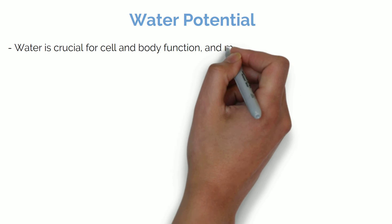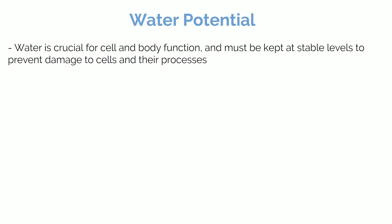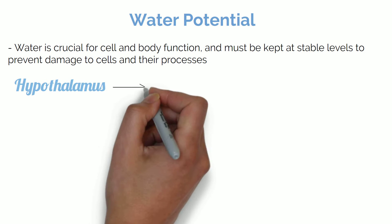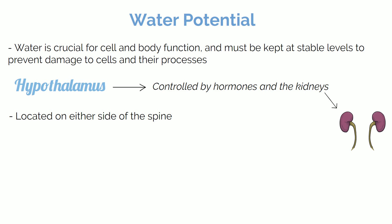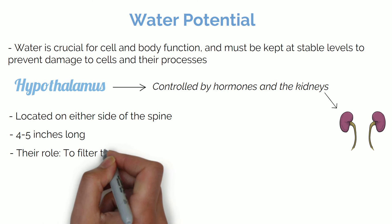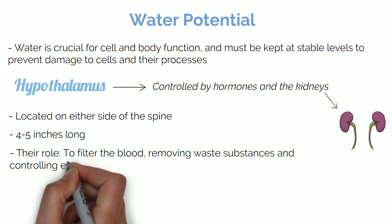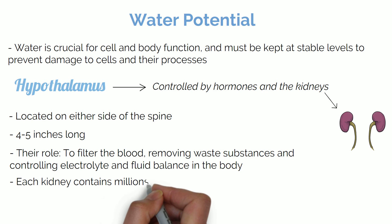Now for controlling water potential. Water potential is essential to control in the body, as water is crucial for cell and body function and must be kept at stable levels to prevent damage to cells and their processes. Water potential is sensed in the hypothalamus and is controlled by hormones and the kidneys. The kidneys are a pair of bean-shaped organs located on either side of your spine, about four to five inches long, and their role is to filter the blood, removing waste substances and controlling electrolyte and fluid balance in the body.